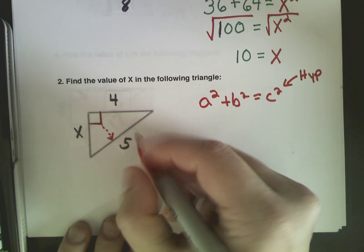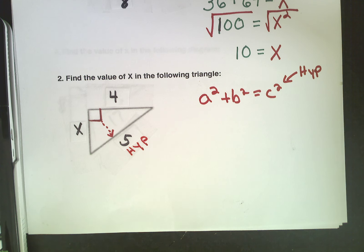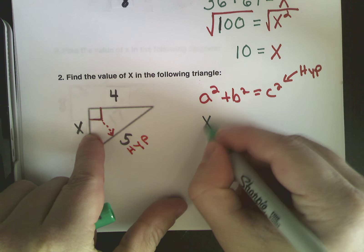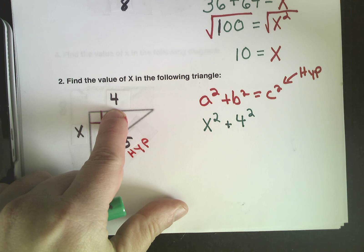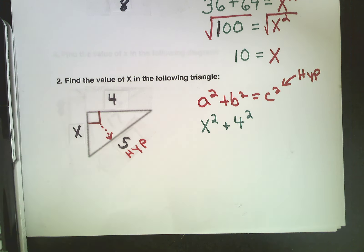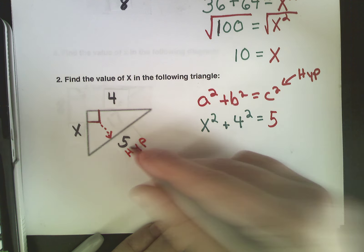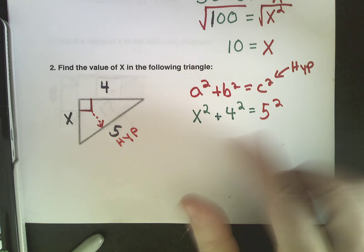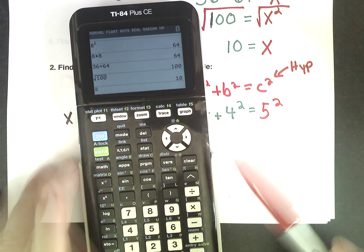Okay, next problem. When I look at it I see something different — it may not look different right away but you'll see it in a second. Right triangle — Pythagorean theorem only works with right triangles. Now my hypotenuse is 5 in this case. The last question the hypotenuse was x, but now my hypotenuse is always across from the right angle. So 5 is the hypotenuse. I have a 4 and an x on the other sides. So now this is going to be different.